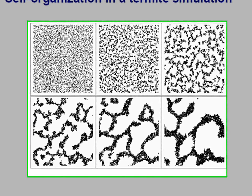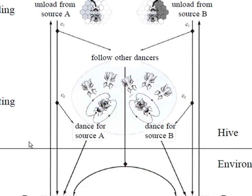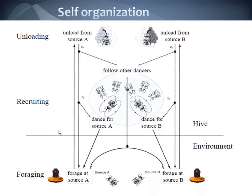This is a termite simulation, very similar to ants. When time equals zero, there is no organization among the termites. But as time moves on, they become organized and work to achieve a common goal. As you can see in this picture, the activity is divided into three separate parts: unloading, recruiting, and foraging.